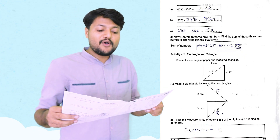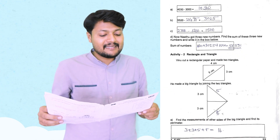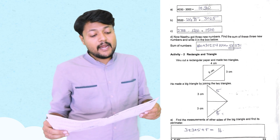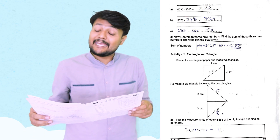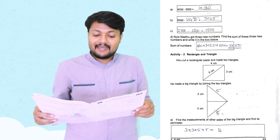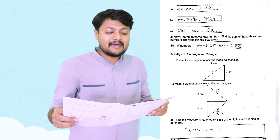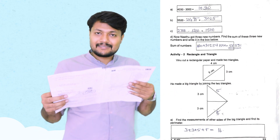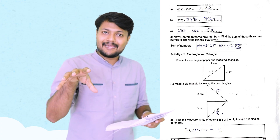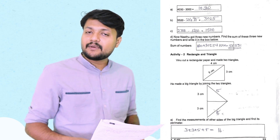Find the sum of these three new numbers and write in the boxes below. Three new numbers. Find the sum of these three new numbers and write it in the box below. We will get a number of 30 plus 20. That is equal to 5,555.